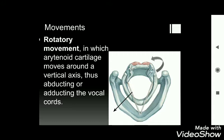In the cricoarytenoid joint, the posterior part of the cricoid cartilage is called the laminae — the broader part. Above the cricoid laminae, the two arytenoid cartilages rest and form the cricoarytenoid joint. The movement of this joint is rotatory movement, in which the arytenoid cartilage moves around a vertical axis, abducting or adducting the vocal cords.